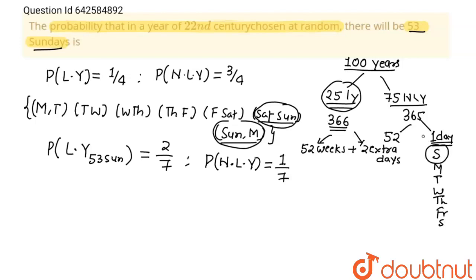That one day is Sunday. What is probability? That is 1 upon 7. So getting 53 Sundays in 22nd century will be equals to...